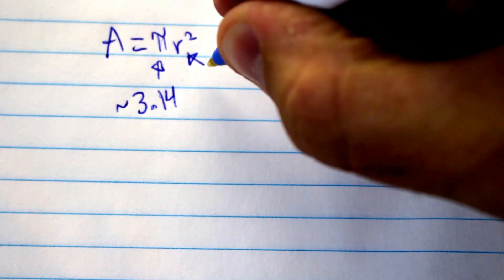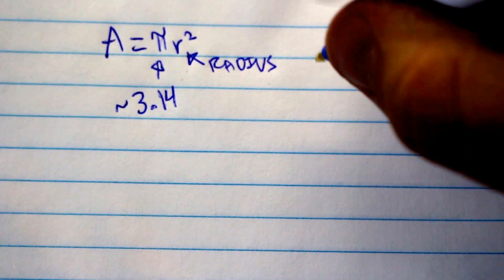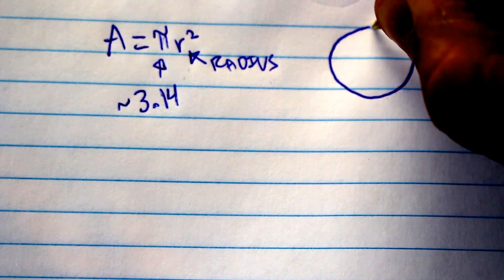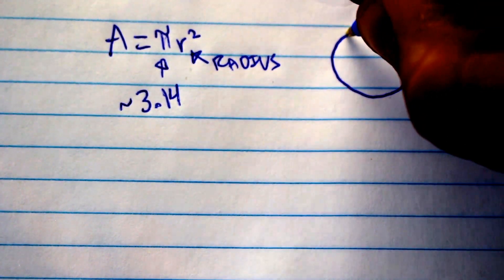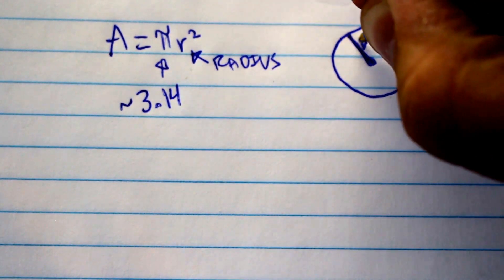This number, this r, is the radius. And it's equal to half the distance across the circle. So if we have this circle here, we have this line, this would be your radius.